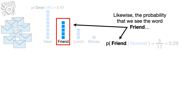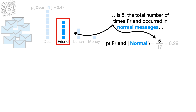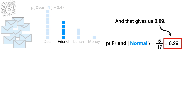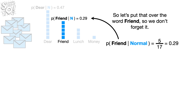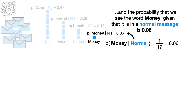Likewise, the probability that we see the word 'friend,' given that we saw it in a normal message, is 5 — the total number of times 'friend' occurred in normal messages — divided by 17, the total number of words in all of the normal messages. And that gives us 0.29. So let's put that over the word 'friend' so we don't forget it. Likewise, the probability that we see the word 'lunch,' given that it is in a normal message, is 0.18. And the probability that we see the word 'money,' given that it is in a normal message, is 0.06.